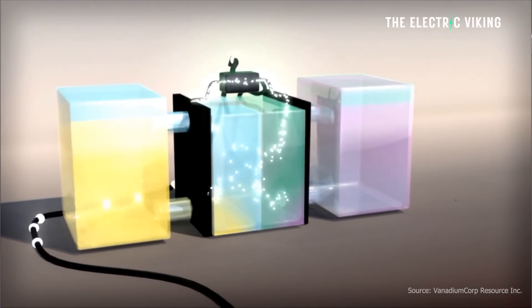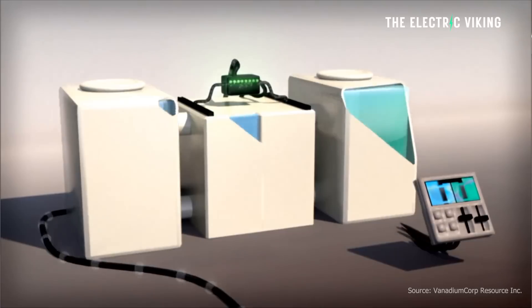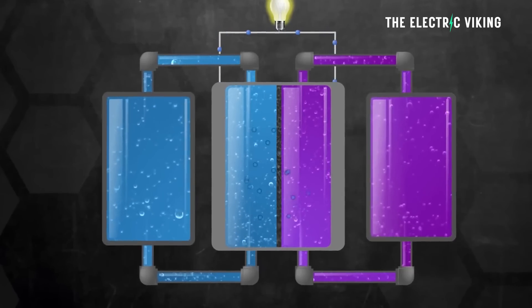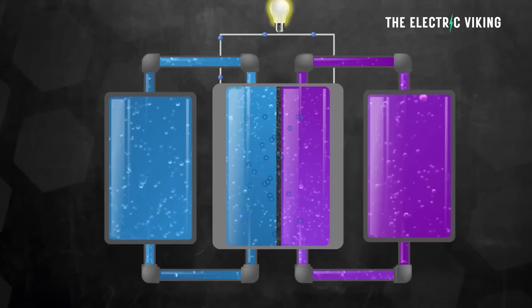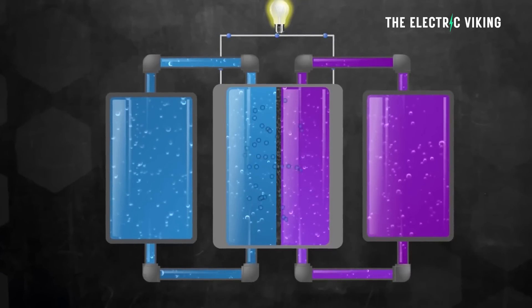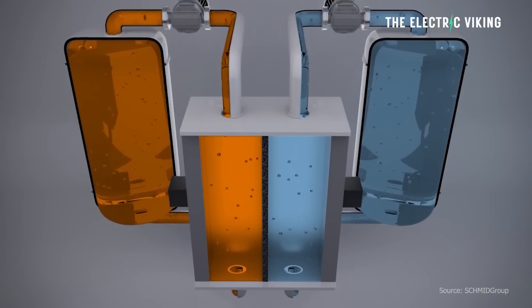Flow batteries have the advantage of decoupling power and energy capacity, meaning that their power output can be scaled independently of their storage capacity. This feature allows flow batteries to respond quickly to changes in demand or supply in the electrical grid, meaning we can replace fossil fuel peaker plants with flow batteries, which are much cheaper to run and to build, and of course, much cleaner.